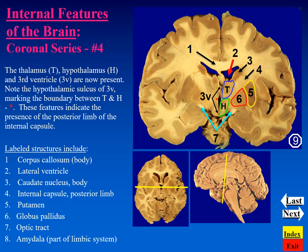Lateral to the optic tract, and below the lenticular nuclei structures, we see a gray matter mass in the temporal lobe of the brain — the amygdala. The amygdala is part of the limbic system.